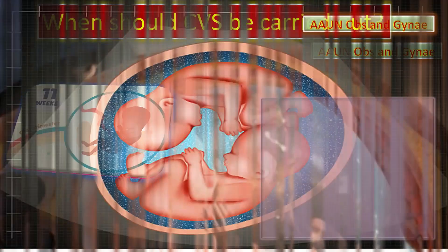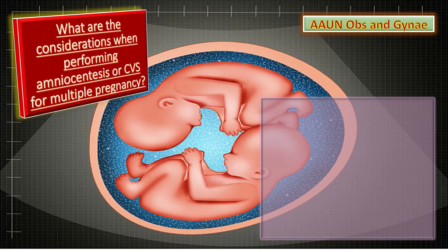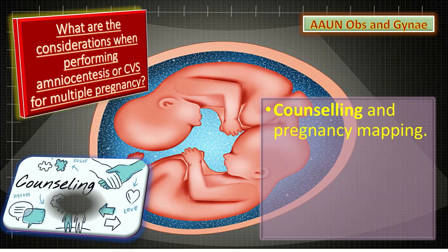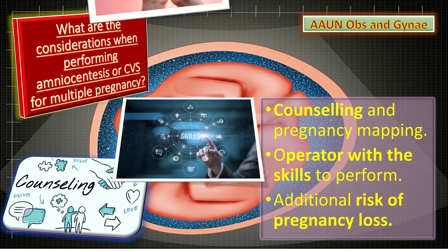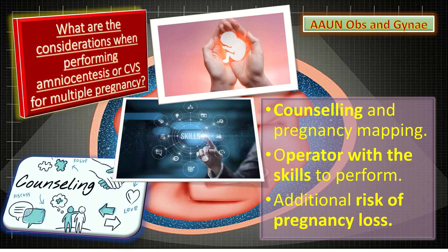What are the considerations when performing amniocentesis or chorionic villus sampling for multiple pregnancy? First, women should receive detailed counseling and pregnancy mapping by suitably trained healthcare professionals. Second, the procedure should be performed by an operator with skills to perform selective termination of pregnancy if required. Women with multiple pregnancies should be informed that the additional risk of pregnancy loss for twin pregnancy following CVS or amniocentesis by a skilled operator is around 1%.